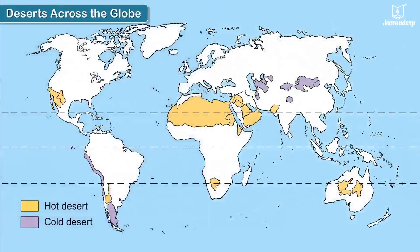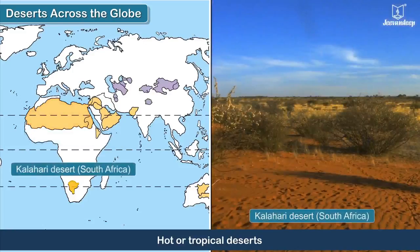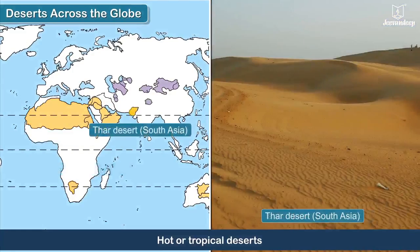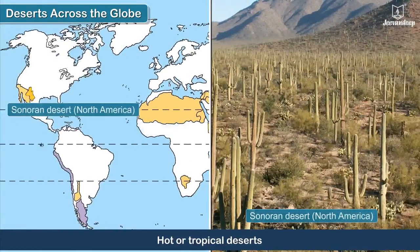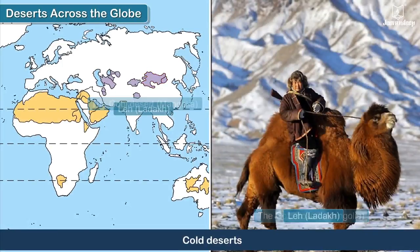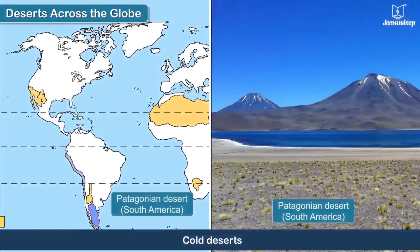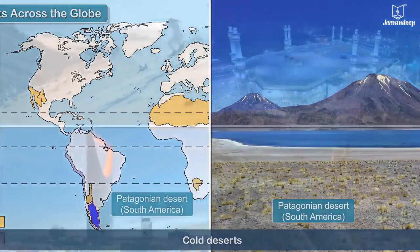Deserts across the globe: The Sahara Desert in North Africa, the Kalahari Desert in South Africa, the Thar Desert in South Asia, and the Sonoran Desert in North America are hot or tropical deserts. The Gobi Desert in Mongolia, Leh in Ladakh, and the Patagonian Desert in South America are some examples of cold deserts.